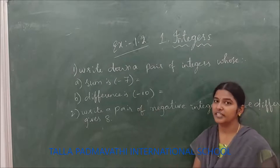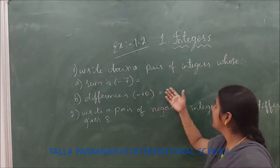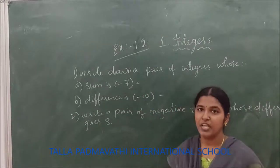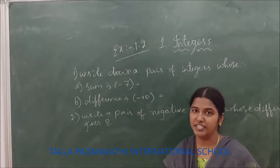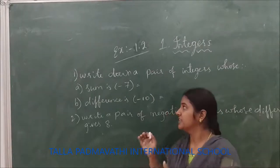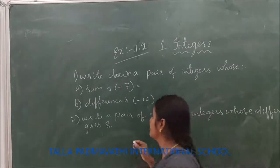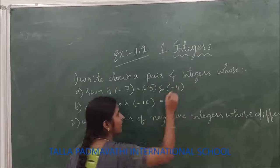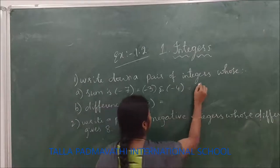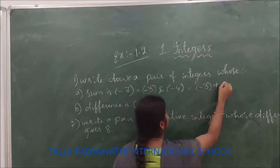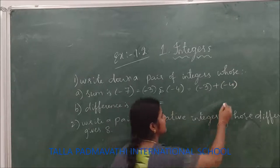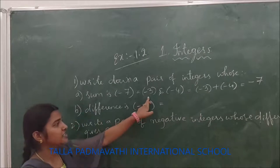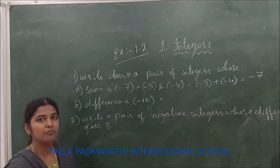Let us see the first bit: write down a pair of integers whose sum is minus 7. You need to take a pair of integers whose sum should be minus 7. So let us take minus 3 and minus 4. The sum of the two integers is minus 3 plus minus 4, and your answer is minus 7. So your pair of integers are minus 3 and minus 4.